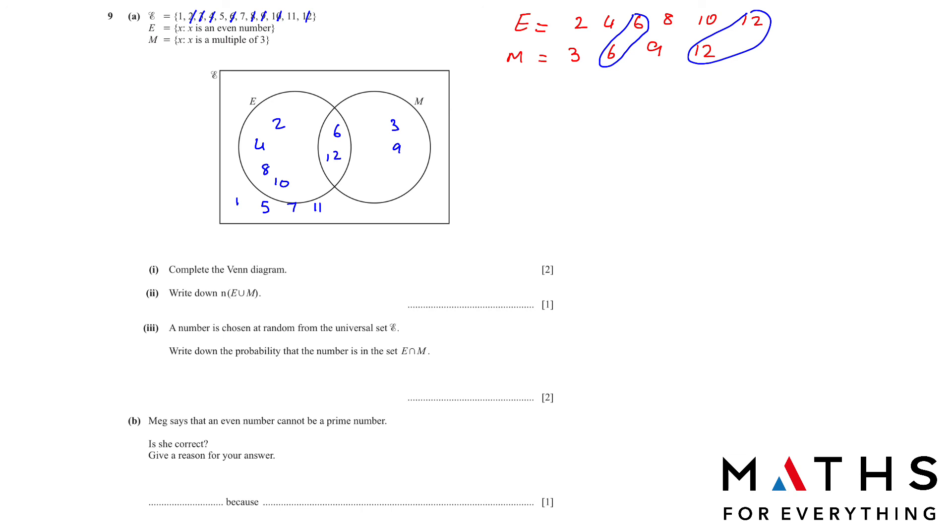Next, write down N of E union M. N means the number in E union M, which is inside the two circles. We just have to count the numbers: 1, 2, 3, 4, 5, 6, 7, 8. In part 3, a number is chosen at random from the universal set. Write down the probability that the number is in the set E intersection M. The middle part is the intersection. So how many numbers are there? 2. And how many total numbers are there? 12. So when you simplify it, it is 1 over 6.